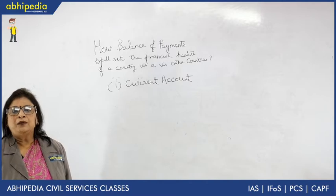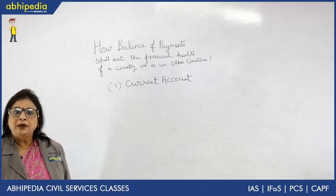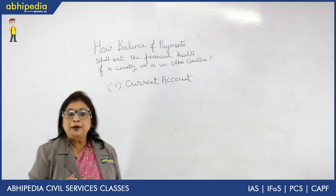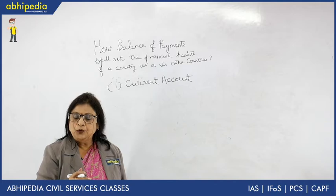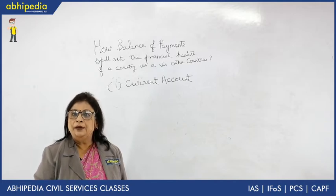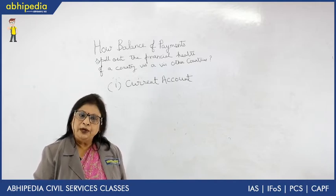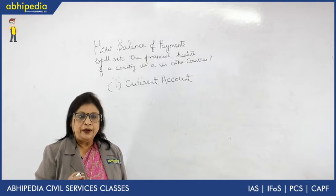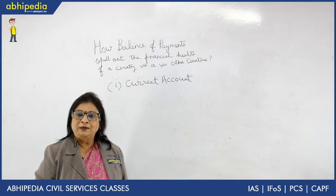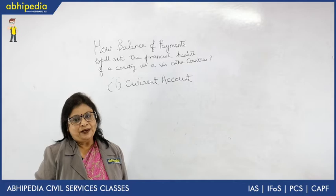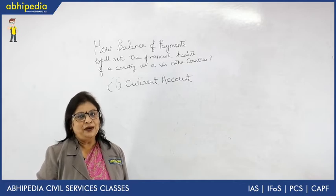The third part of the current account is unilateral transfer. Unilateral transfer is a one-way transfer — that means when you are giving a donation, you should not expect anything in return. Current account thus covers visible items and invisible items — export and import of visible plus invisible items.